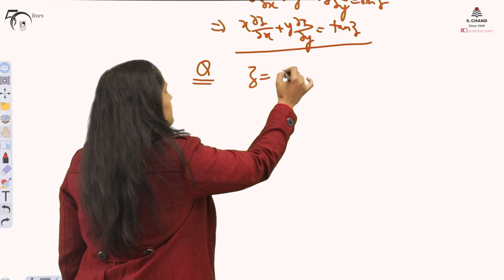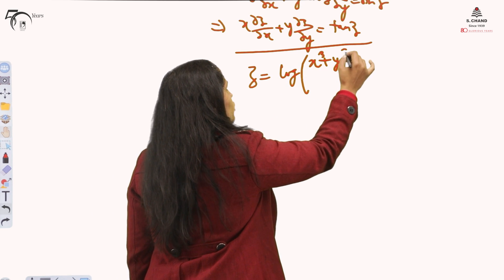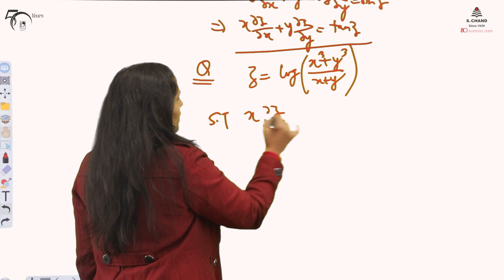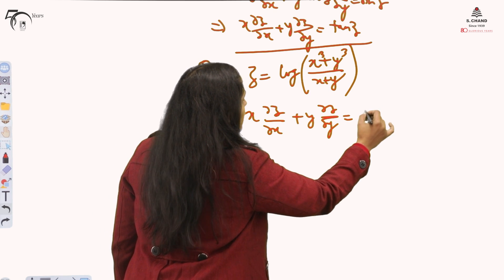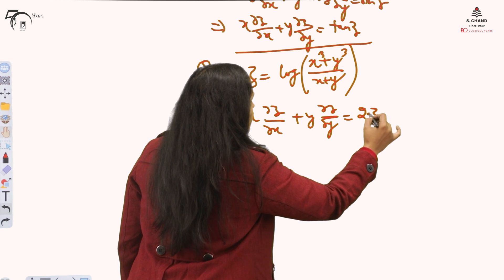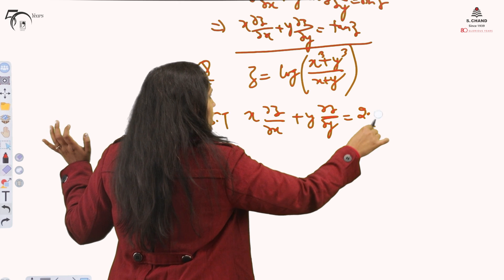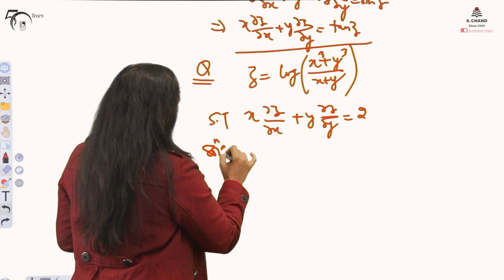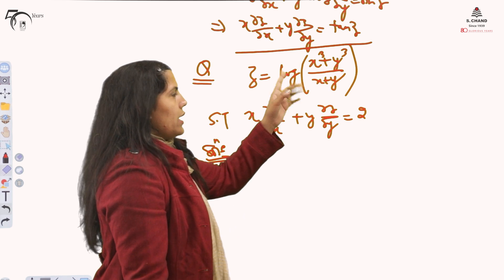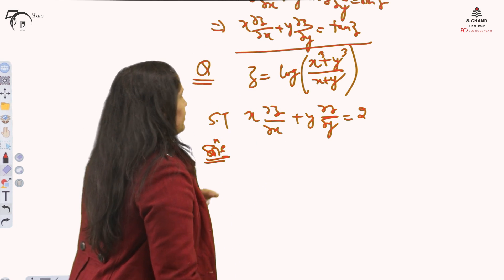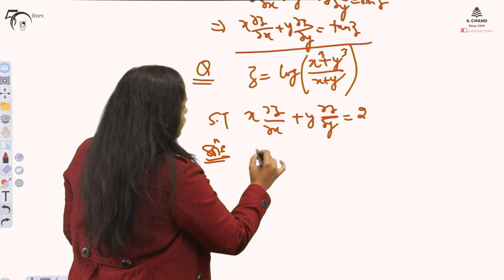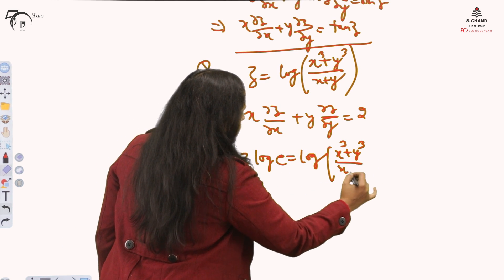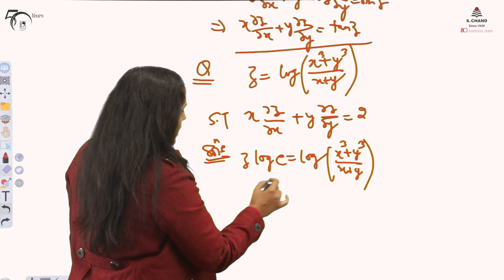Now one more example quickly. My next is z is log of (x cube plus y cube) over (x plus y). And what we have to show is x del z by del x plus y del z by del y equal to 2. The final answer will be just 2. Now how to show this? Again, it is not homogeneous, and we can see nothing is like that it is homogeneous. I removed sine inverse, I took it to the left hand side, but what do I do? How I remove log? So what I do, I just apply log e. That is the only technique we apply to remove log.